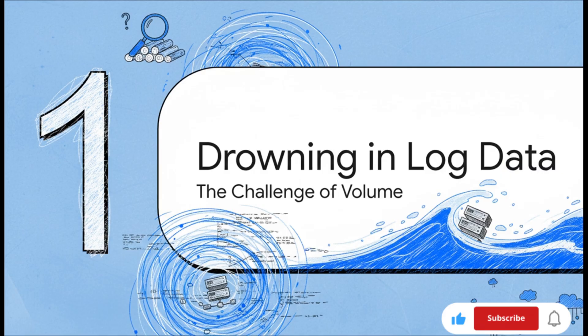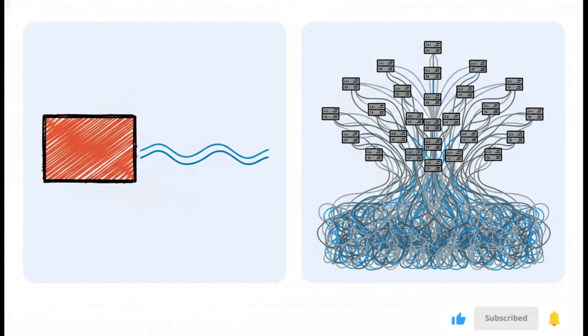So the problem isn't that we don't have enough information. No, the real challenge is trying to find that one critical signal that's buried in an absolute ocean of noise. And this right here visualizes the problem perfectly. Think about it: back in the day with a big monolithic app, you basically had one main log file to worry about. It was like watching a single river. But now with microservices, we're talking about hundreds of different services, each one generating its own constant stream of data.